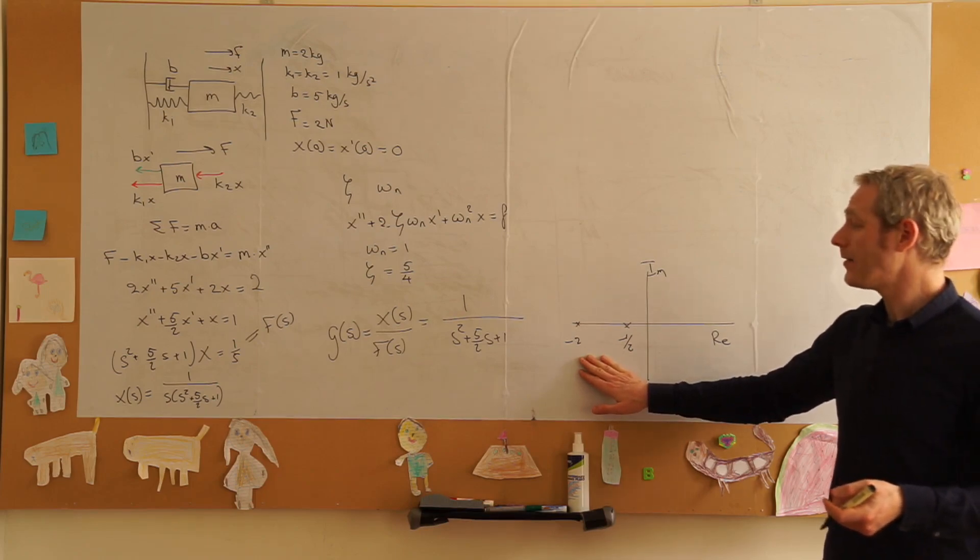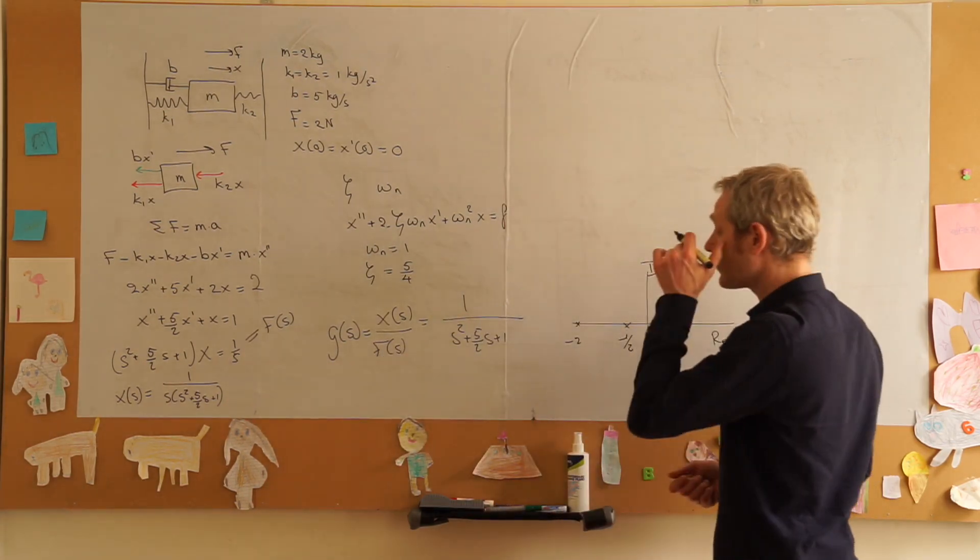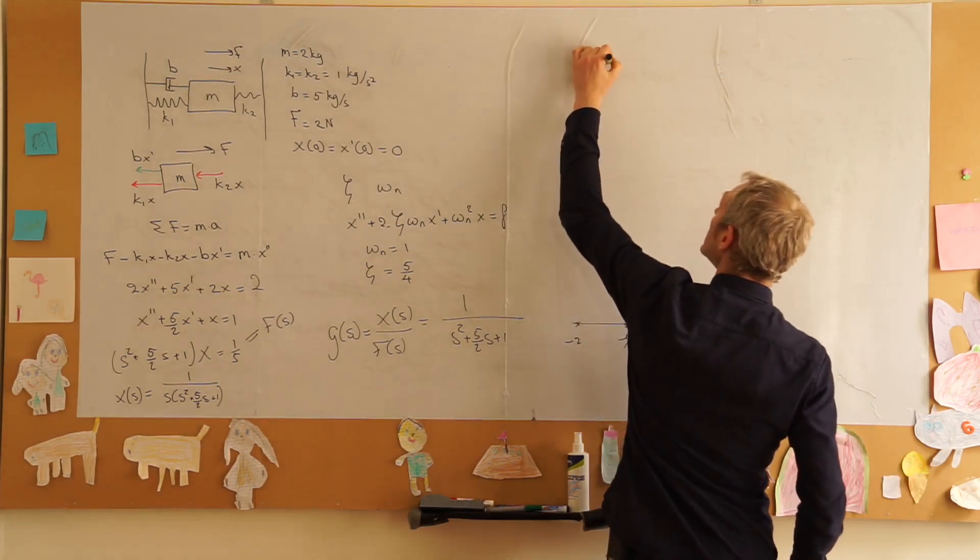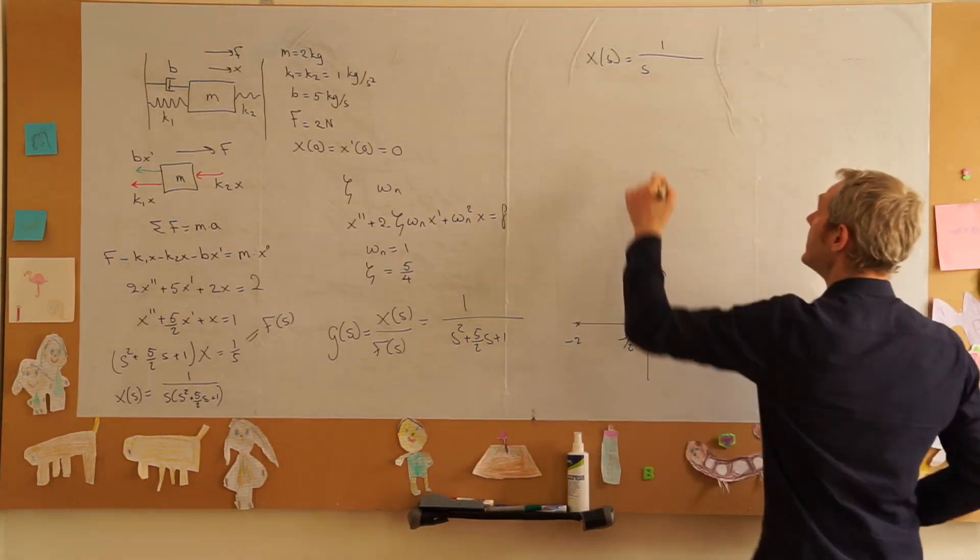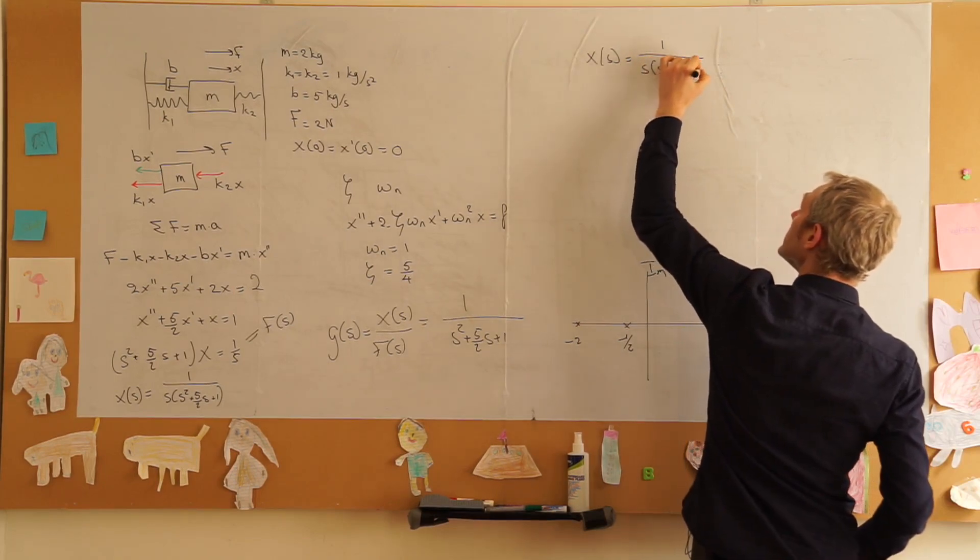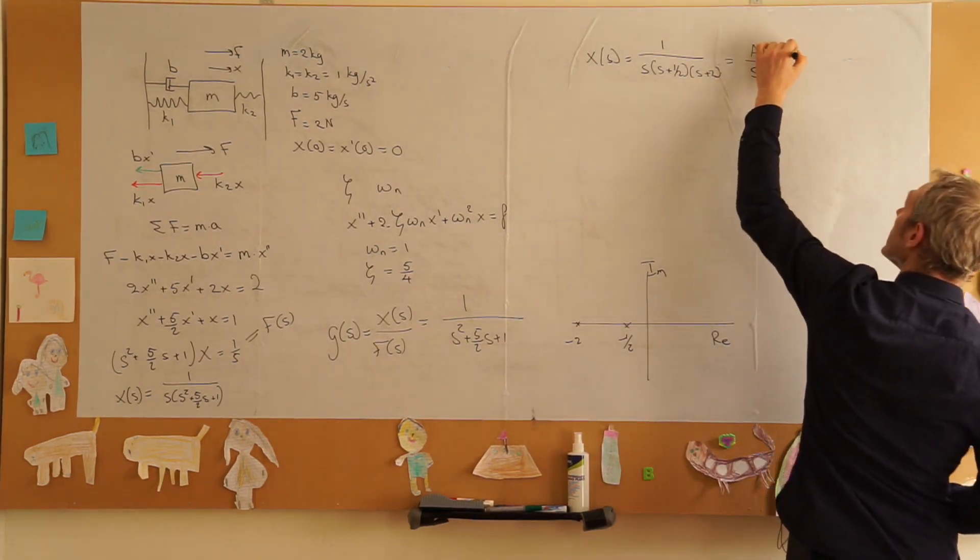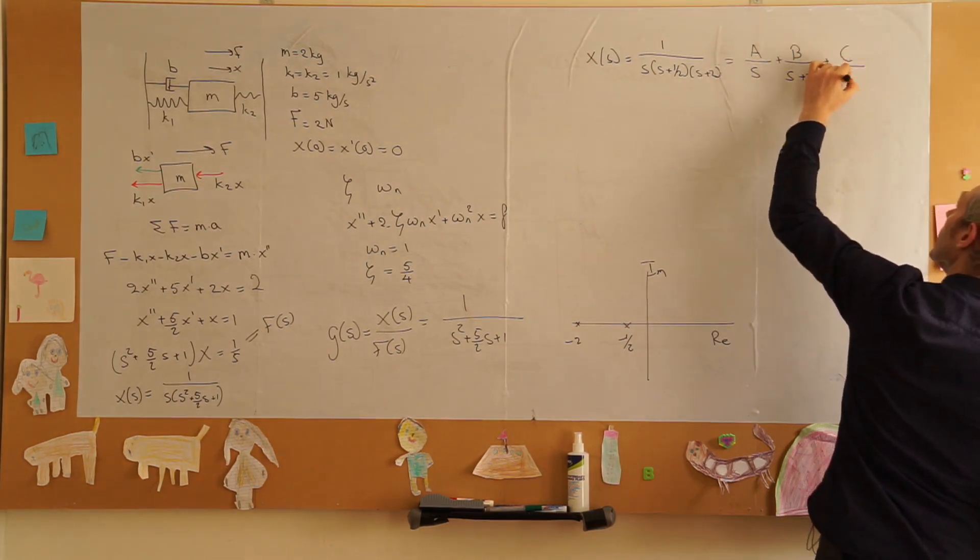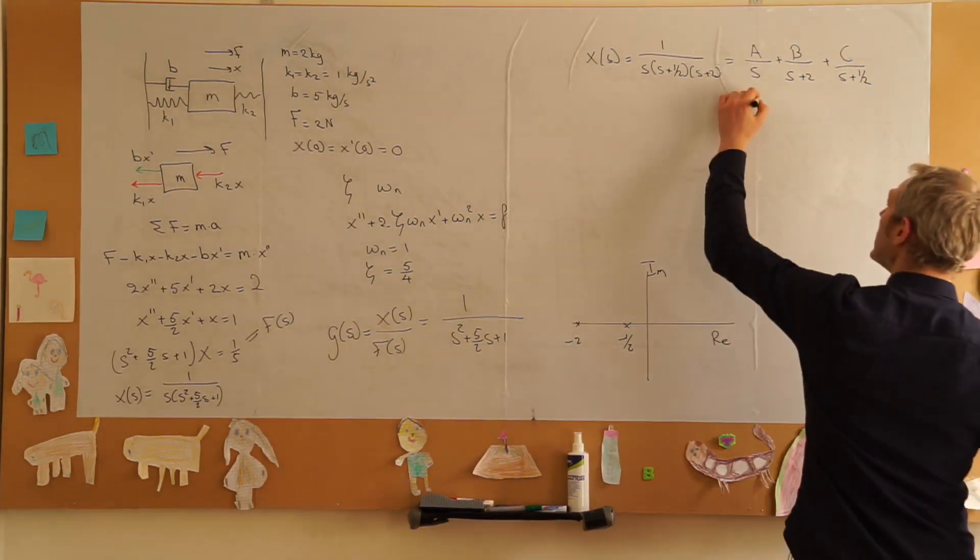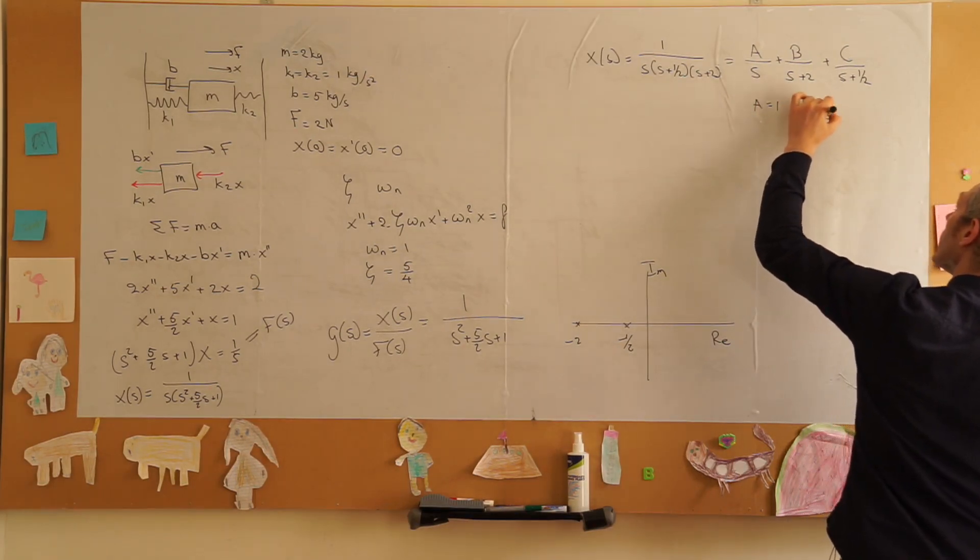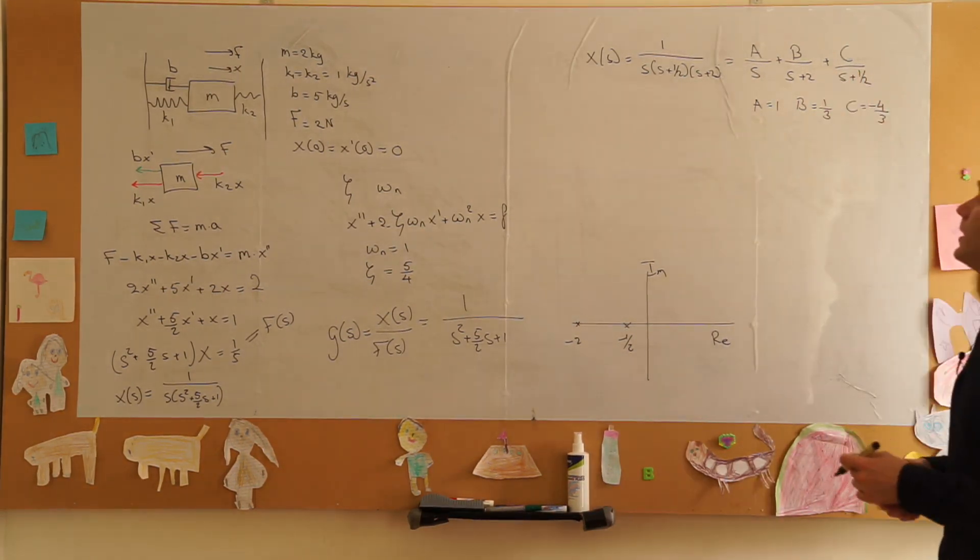We know it's an overdamped system. If we have that x of s is 1 over s, we know how to factorize this part because that is s plus a half times s plus two. This must equal a over s plus b over s plus two plus c over s plus a half. If we do all the calculations we will find that a is equal to one, b is equal to one third and c is equal to minus four over three.